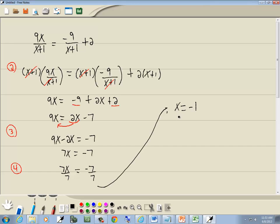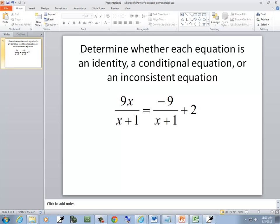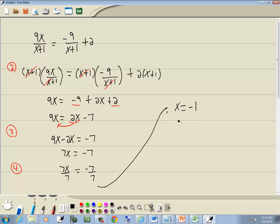Now we came up with an answer. Normally this would be a conditional equation, because we found an answer. But in this particular problem, if we plug the negative 1 back up for x, because we have to do that because it's a rational equation, negative 1 plus 1 gives us a zero in the denominator, which we can't have. So instead of being a conditional equation, it's our inconsistent equation. Basically, there's no answer. I don't care if you write inconsistent equation, or if you write no solution. But there's no answer to it. And that's our problem.